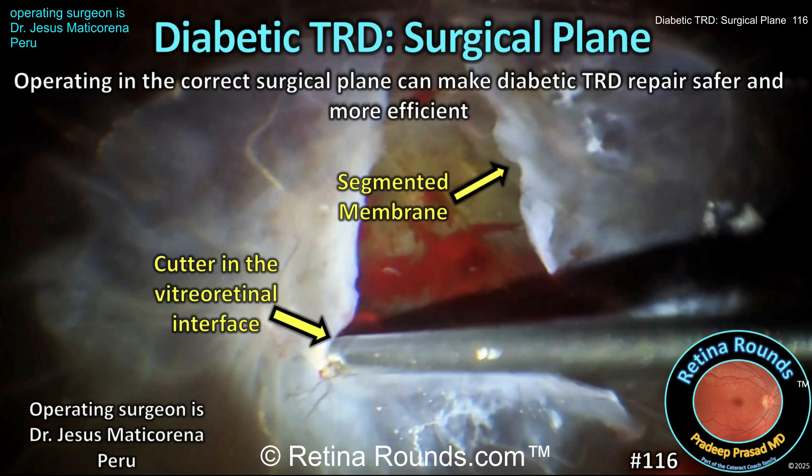Retina Rounds, episode number 116: Surgical Planes and Diabetic Tractional Retinal Detachment Repair. In today's episode, we'll focus on finding the right surgical plane right at the vitreoretinal interface to tackle diabetic TRDs.